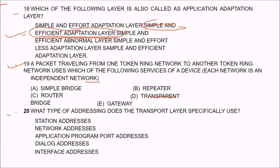Question 20: what type of addressing does the transport layer specifically use? The answer is C — application program port addresses. Port addressing is the type of addressing specifically used by the transport layer.